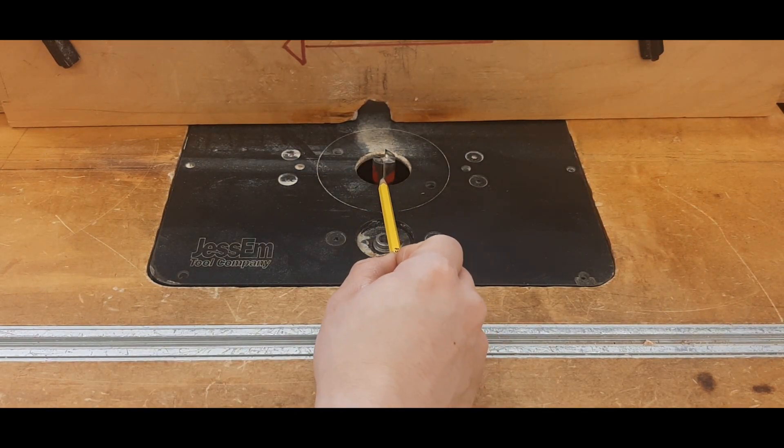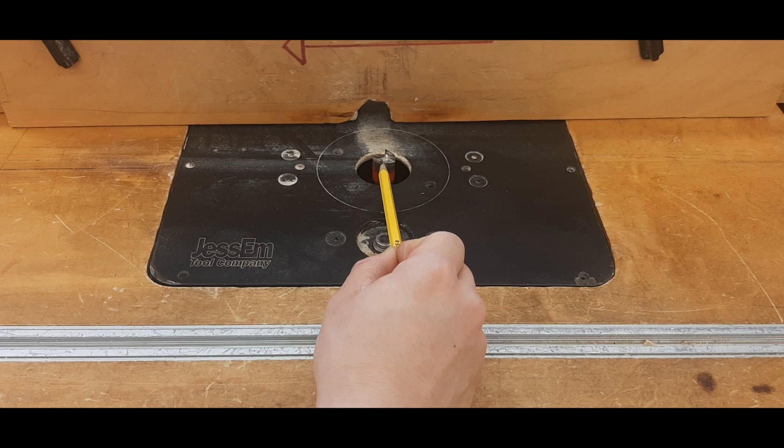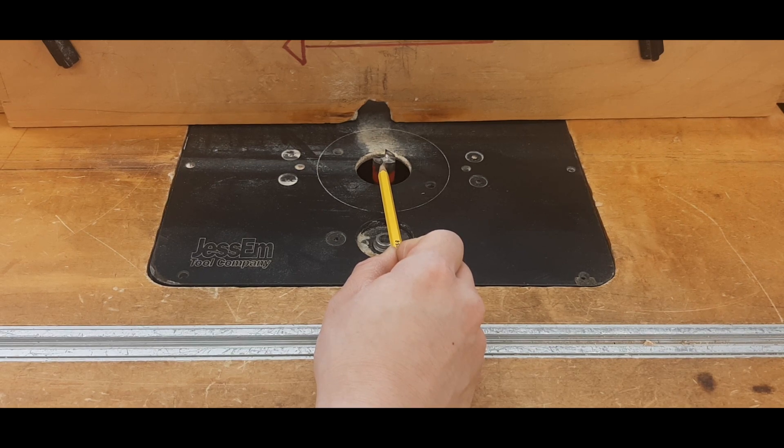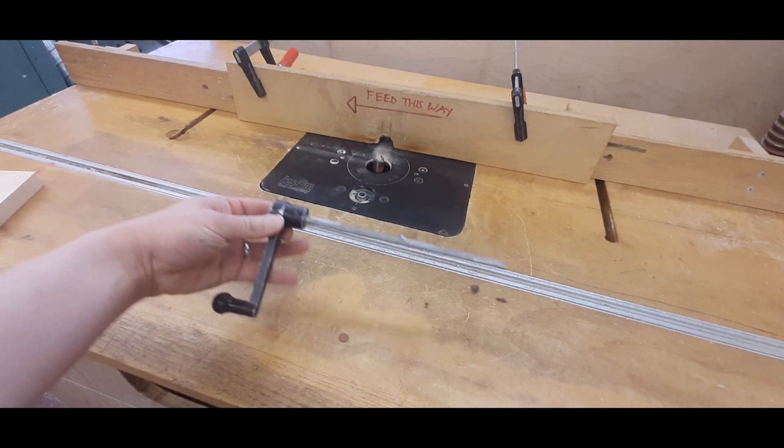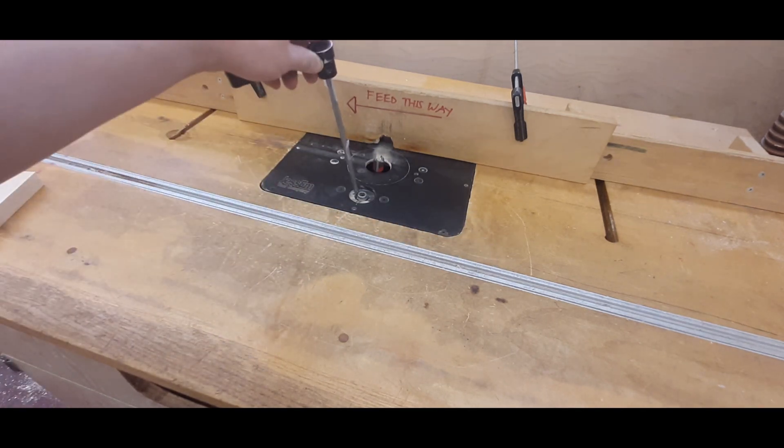That means that this router bit must be sticking up from the table by a quarter of an inch. To adjust the height of this router bit, you're going to need a crank that looks like this, and it goes into this hole right over here.